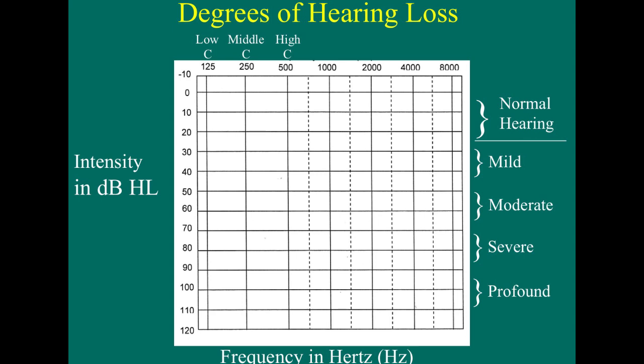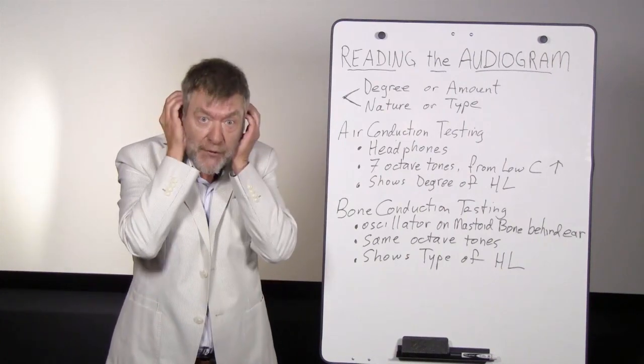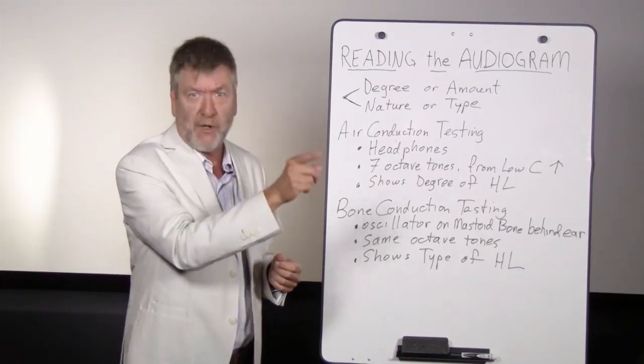Now, you'll notice if it takes 25 decibels or less for the patient to just barely hear the tone, he or she is said to have normal hearing for that tone. If it takes between 25 and 40 decibels for the patient to just barely hear, he or she has a mild hearing loss. If it takes between 40 or 60 decibels to just barely hear, the patient has a moderate degree of hearing loss. 70 decibels, moderately severe hearing loss. 80 decibels, severe hearing loss. 90 or more, a profound hearing loss. Again, I say though, those degrees of loss are shown by air conduction testing under headphones and are plotted as X's and O's going across the audiogram.